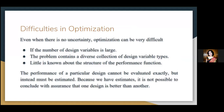Difficulties in optimization. Even when there is no uncertainty, optimization can be very difficult, especially if the number of design variables is large, the problem contains a diverse collection of variable types, and little is known about the structure of the performance function. Simulation optimization adds an additional complication: the performance of a particular design cannot be evaluated exactly, but instead can only be estimated. Because we have estimates, it is not possible to conclude with assurance that one design is better than another, and this uncertainty frustrates optimization algorithms that try to move in improving directions. One can eliminate this complication by making so many replications or long runs at each design point that the performance estimate has essentially no variance.